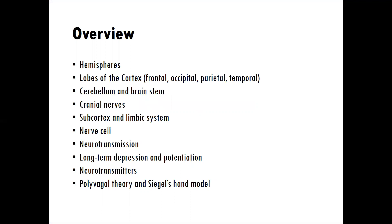In this part of the module — module 1.1 — we're going to be exploring the hemispheres of the brain, the right and left hemisphere. We'll also look at the lobes of the cortex. There are four main lobes: frontal, occipital, parietal, and temporal. We'll look at the cerebellum and the brain stem. The cerebellum is that cauliflower-looking structure in the brain, sometimes called the little brain. We'll examine the cranial nerves and pay particular attention to cranial nerve 10, sometimes called the vagus nerve.